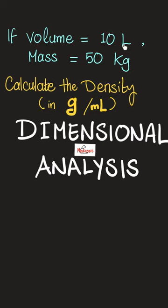If the volume of a substance is 10 liters and its mass is 50 kilograms, can you calculate the density of that substance in grams per milliliters? Please pause and try to solve it yourself.